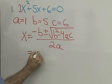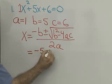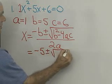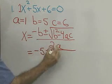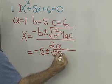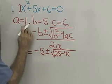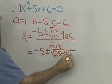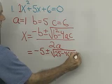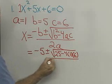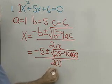So, x is equal to negative b, so negative 5, plus or minus square root of b squared — so that's 25 — minus 4, times a, which is 1, times c, which is 6, all divided by 2 times a.